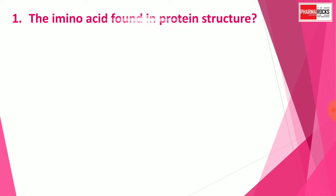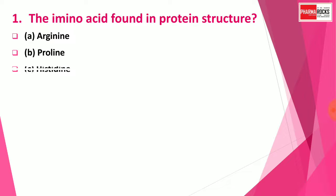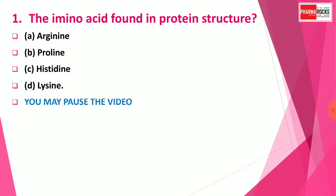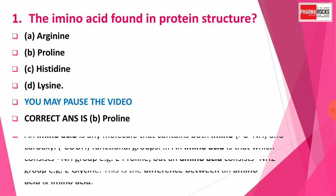Let's start the quiz. Here is question number 1: The imino acid found in a protein structure is — Option A: Arginine, Option B: Proline, Option C: Histidine, Option D: Lysine. You may pause the video for thinking about the correct answer. The correct answer for this question is Option B: Proline.